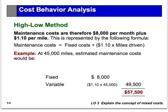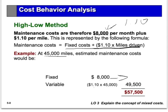Now we can predict future cost behavior for this mixed cost. The formula is: total cost = $8,000 per month plus $1.10 for every mile driven. So if next month we drive 45,000 miles, the estimated cost would be $8,000 fixed plus $1.10 × 45,000 = $49,500 variable, giving a total cost of $57,500.